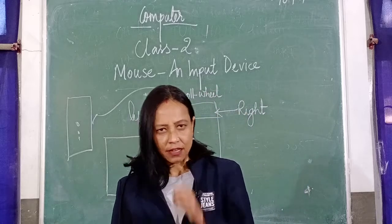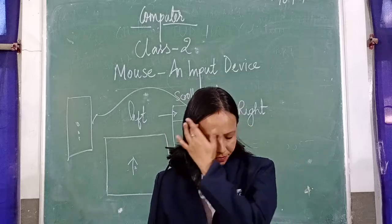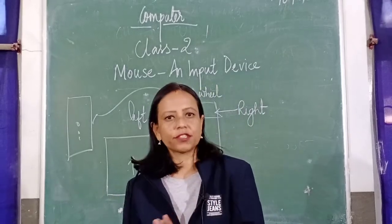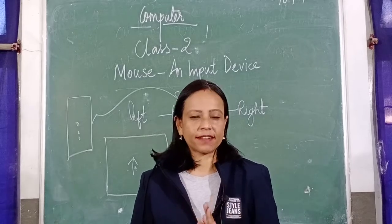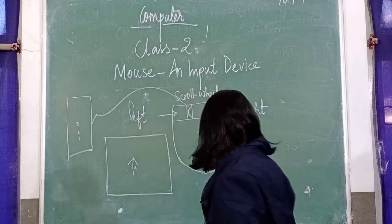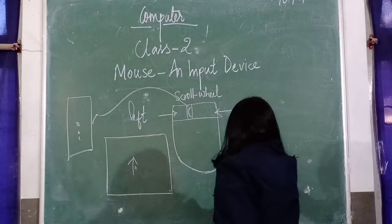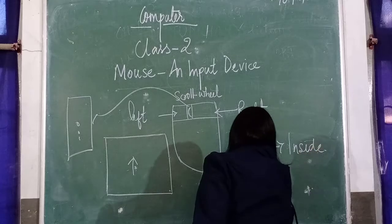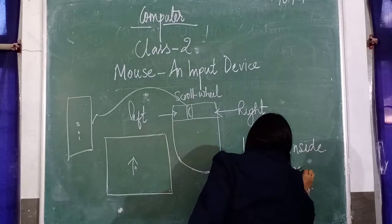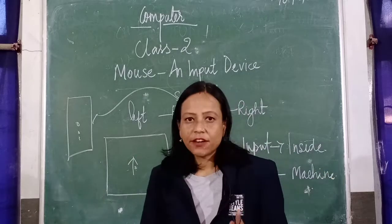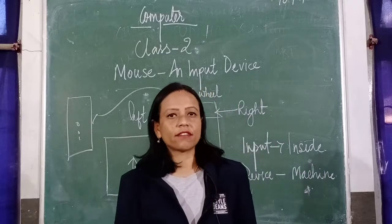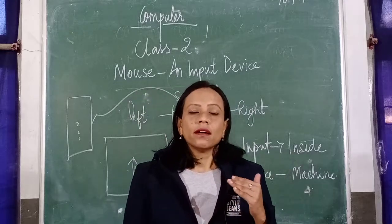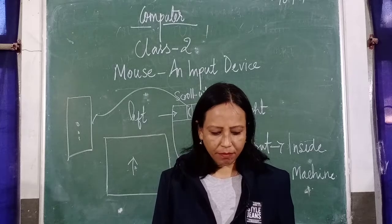Why do we call it an input device? Because as I have already told you, there are two types of things — input devices and output devices. Input means inside. Whatever machine helps you to work inside the computer is known as an input device, and device means machine. Whichever machine helps us to work inside the computer is known as an input device. So let's start the chapter now.